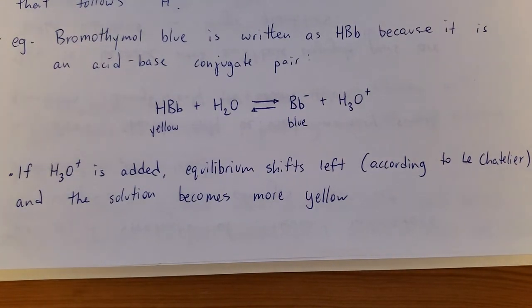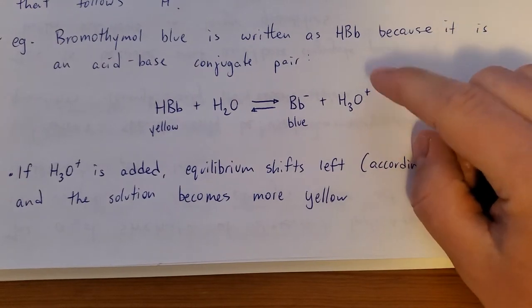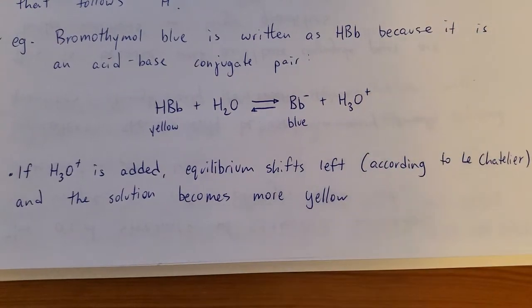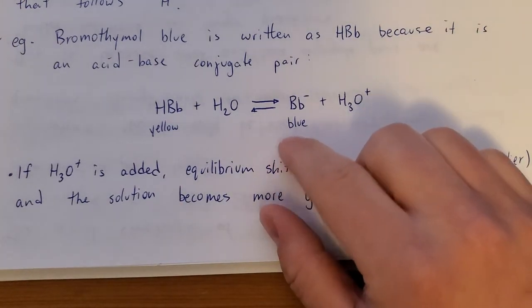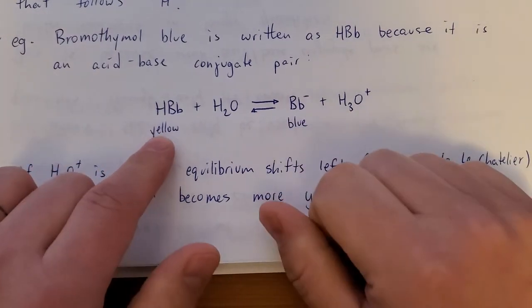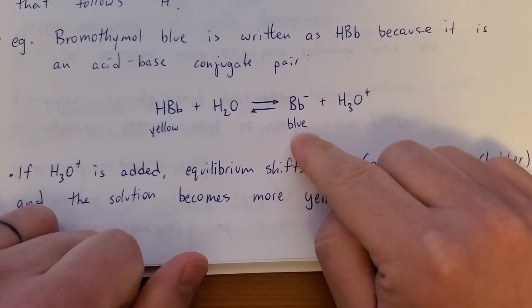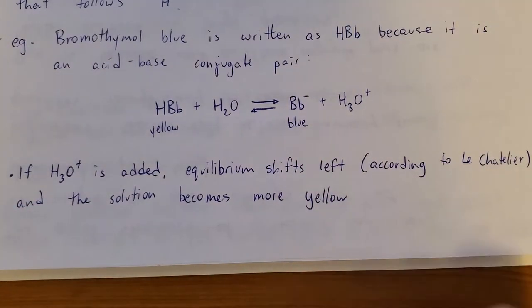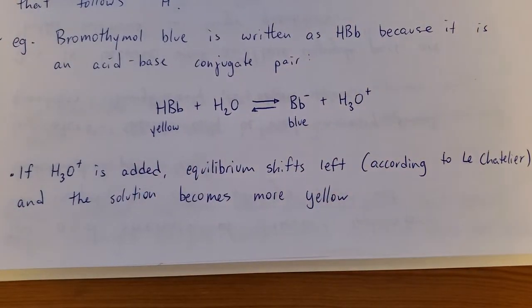Similarly, if you add hydroxide, it'll remove some hydronium. The system will respond to produce more. By doing so, it makes more of this blue stuff. So the HBB is yellow, the conjugate base is blue, and whatever side of the equilibrium it's on, that'll be the color it shows.